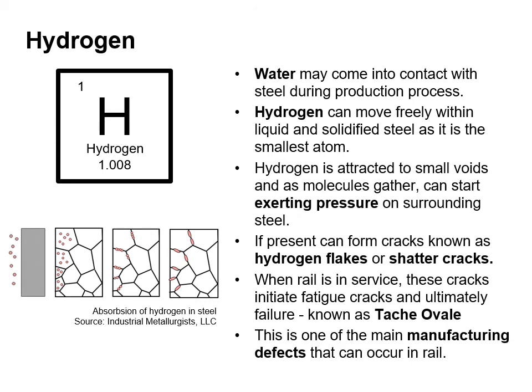Water may come into contact with steel during the production process. Hydrogen can move freely within liquid and solidified steel because of its small atomic size. Hydrogen is attracted to small voids and, as molecules gather, can start exerting pressure on the surrounding steel. If present, it can form cracks — known as hydrogen flakes or shatter cracks — and when the rail is in service these cracks initiate fatigue cracks and ultimately failure, known as tache ovale. This is one of the main manufacturing defects that can occur in rails.